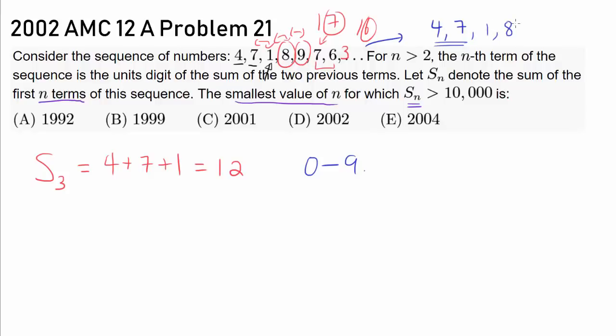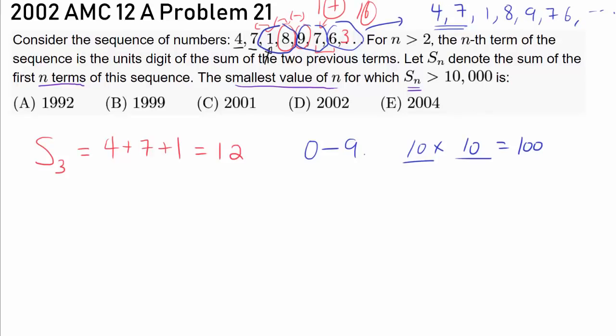Because after 4, 7, we know we are going to have 1, 8, 9, 7, 6, and so on. So we know this sequence eventually may repeat with 4, 7. Wait a bit. But it has to repeat. Why does it have to repeat? Because if it does not repeat, that would mean every single pair after 4, 7 is different from 4, 7. If we assume that, that's going to mean there are infinitely many possible ways of picking two numbers between 0 and 9 each. But there is only 100 ways of picking a pair of numbers, so eventually it has to repeat.